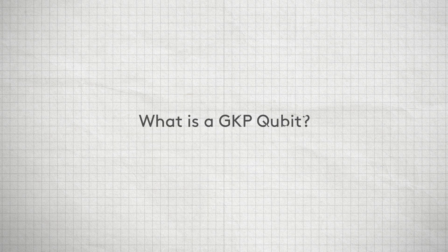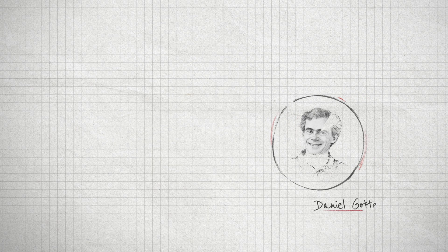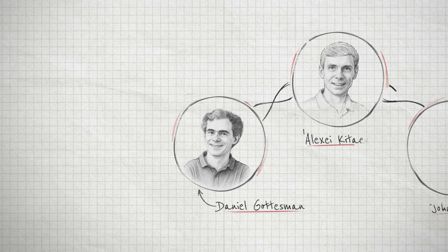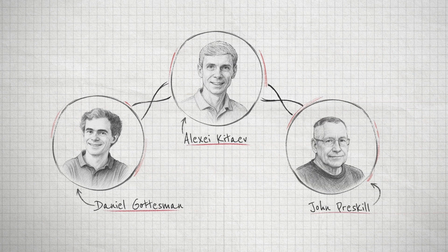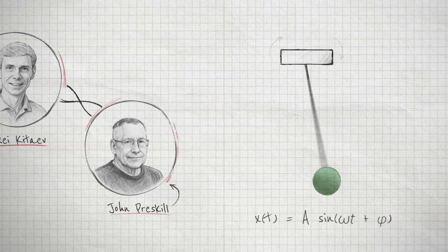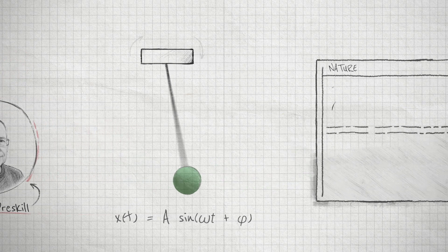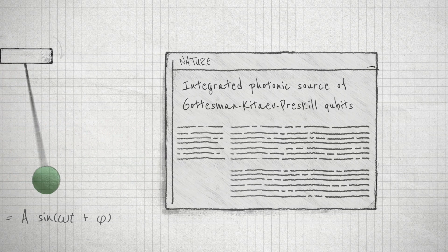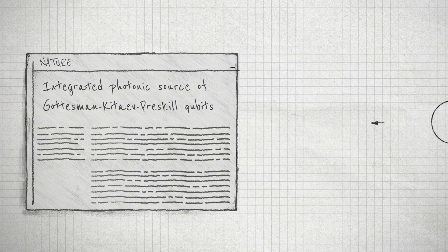Let's look at what exactly a GKP qubit is. Nearly 25 years ago, three scientists theorized that a qubit could be built by encoding it into a harmonic oscillator. In a result just published in Nature, Xanadu has created the world's first photonic GKP qubit on an integrated chip.